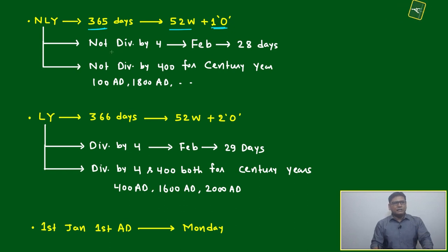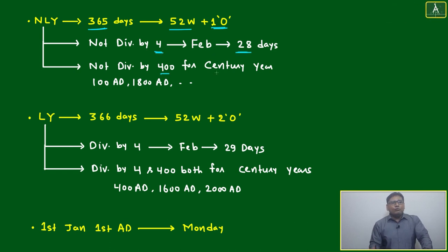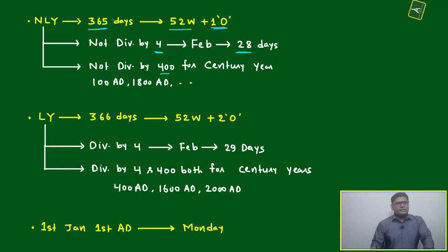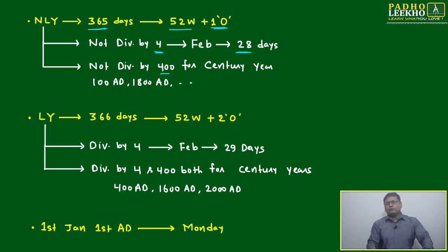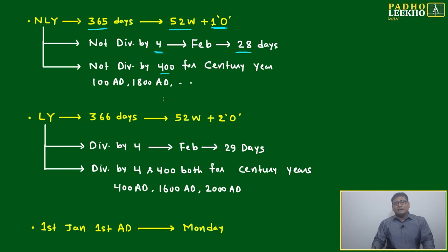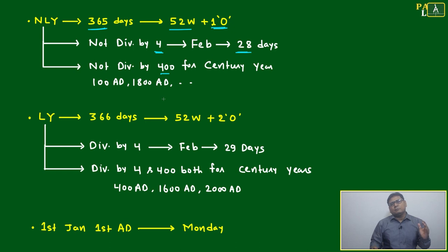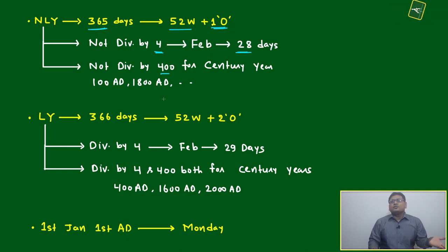For a non-leap year: it is not divisible by 4, February has 28 days, and for century years it is not divisible by 400 — for example 1800, 1880. For a non-leap year, the number of odd days is one. If you are adding 2000 non-leap years, multiply one by 2000 and divide by seven to get the final odd days count.